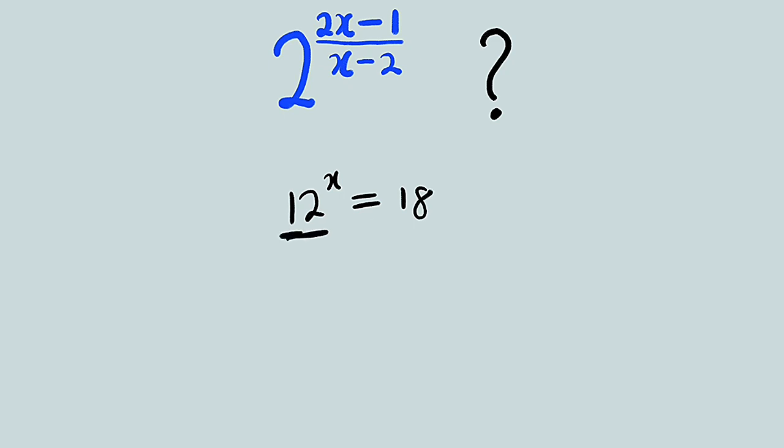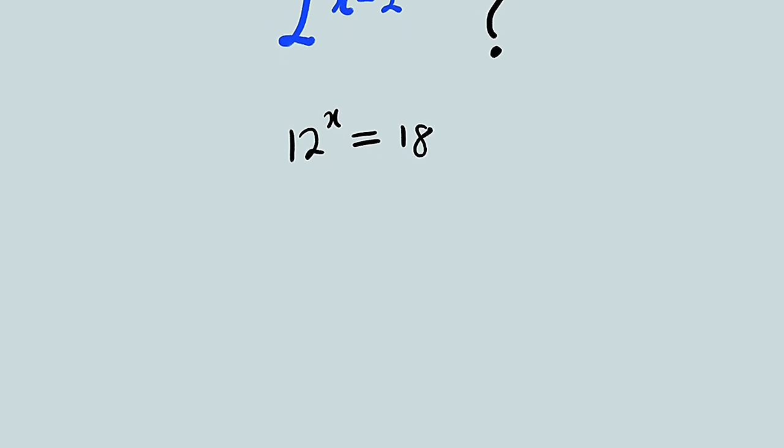I know 12 can be written as 4 multiplied by 3. So I have 4 multiplied by 3, all to the power of x. And on the right hand side, 18 can be written as 9 multiplied by 2.